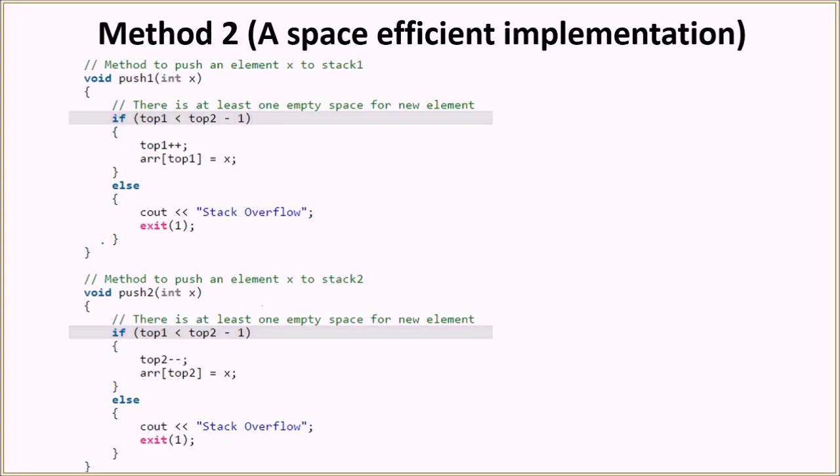Let's look at the push1 operation. Push1 is a method to push an element x to stack 1. We will be checking this condition: if top1 is smaller than top2-1, so if there is space between top1 and top2, then we do the push operation. Otherwise, we say that it is stack overflow and we exit. If there is space between the tops of both the stacks, then we do top1++ and then we put the element x at the top1 position.